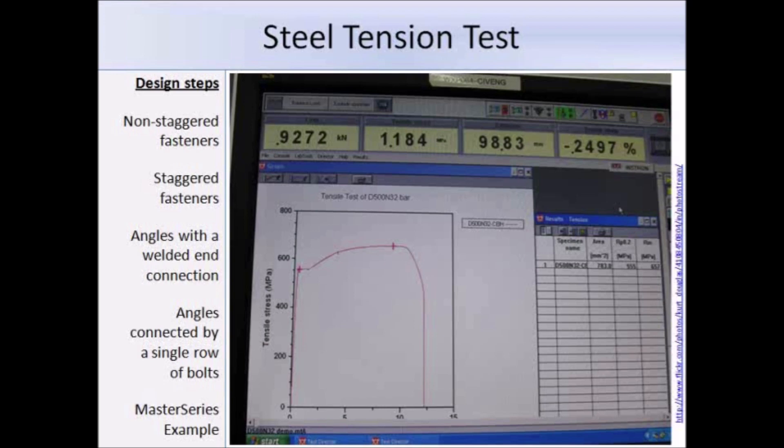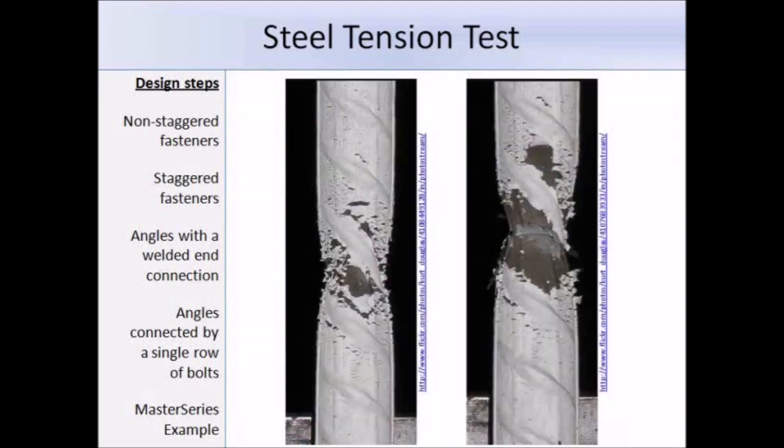That is the shape that we would expect. Here are some more photographs from the same experiment. On the left you can see the first stages of necking, and on the right you can see there is further necking and the section has failed.